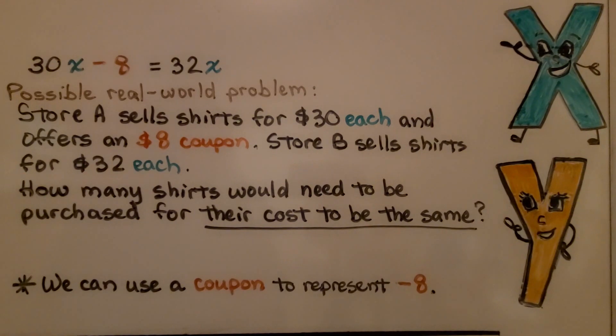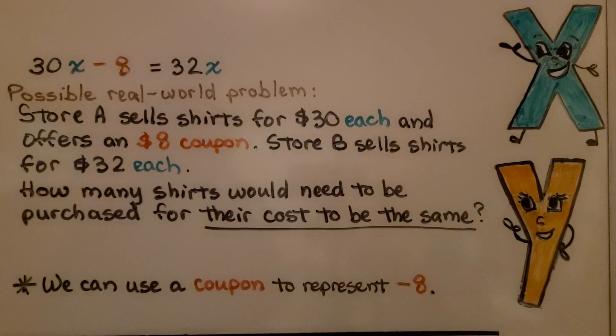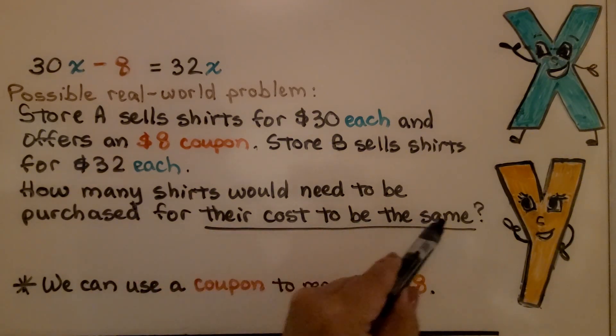Here we have another one. 30x minus 8 is equal to 32x. Our possible real-world problem. Now pay attention. We have a minus 8 here. Store A sells shirts for $30 each and offers an $8 coupon. Store B sells the shirts for $32 each. How many shirts would need to be purchased for their cost to be the same?